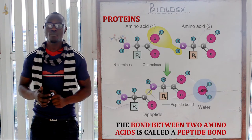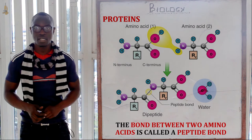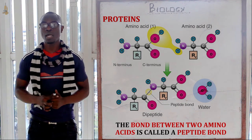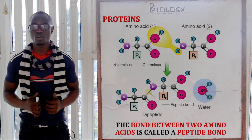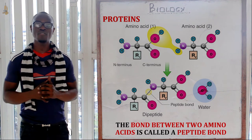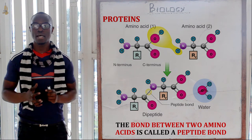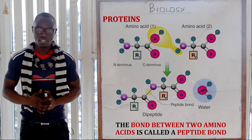The bond in amino acids is called a peptide bond, whereby many amino acids may combine to give a long protein chain, which is called a dipeptide chain.